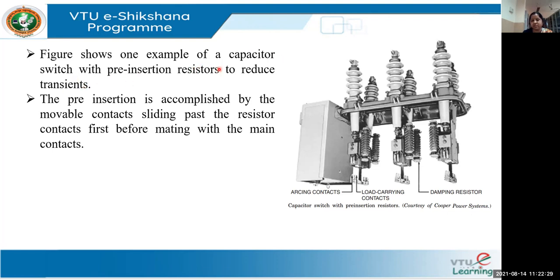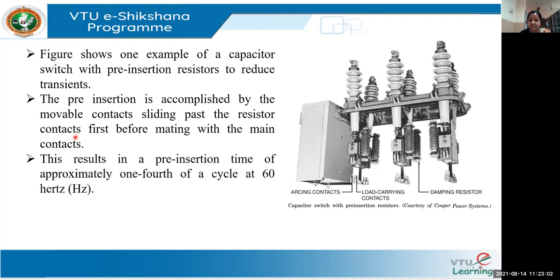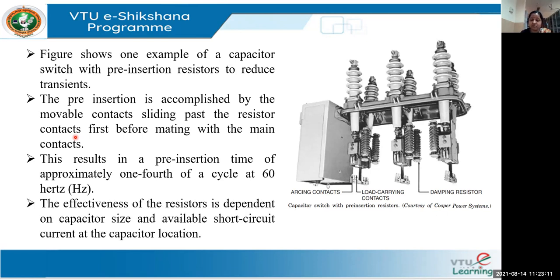This figure shows one example of a capacitor switch with pre-insertion resistors to reduce transients. The pre-insertion is accomplished by movable contacts sliding past the resistor contacts first before mating with the main contacts. This results in a pre-insertion time of approximately one-quarter of a cycle, which holds good for 60 Hz. The effectiveness of the resistors depends on the size of the capacitor being used and on the short-circuit current value at the point of capacitor location.